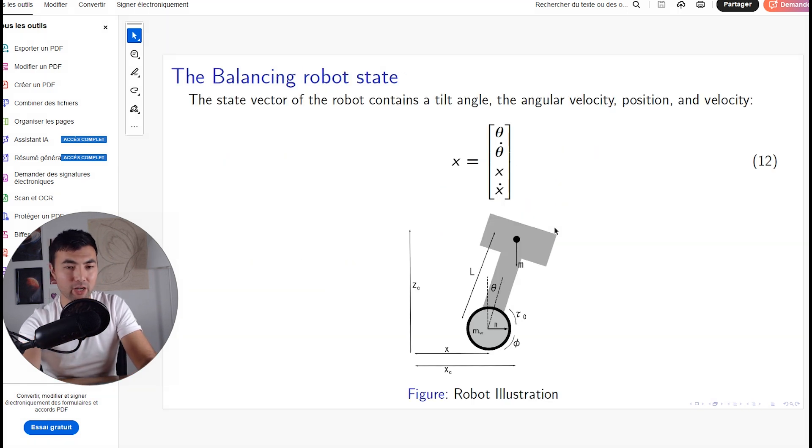First, we define the state variables, the parameters we're dealing with. In our case, it's the angle, the angular velocity, the position of the robot, and the velocity of the robot. Once we define them...